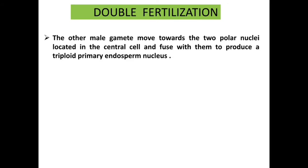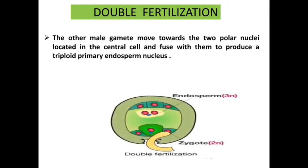The other male gamete moves towards the two polar nuclei located in the central cell. So one male gamete fuses with the egg cell, and the other moves towards the center where the two polar nuclei are located, and fuses with them to produce a triploid primary endosperm nucleus, which we may call PEN — triploid primary endosperm nucleus.